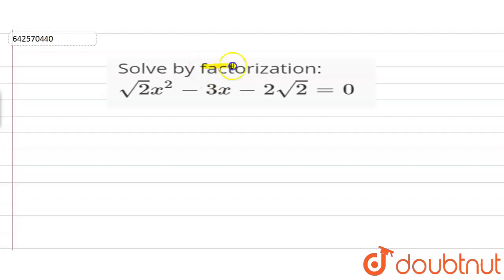So we have to solve the equation by factorization method. We have root 2 x square minus 3x minus 2 root 2 is equal to 0.